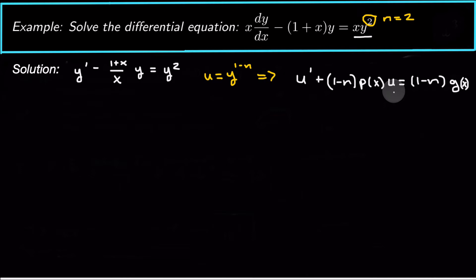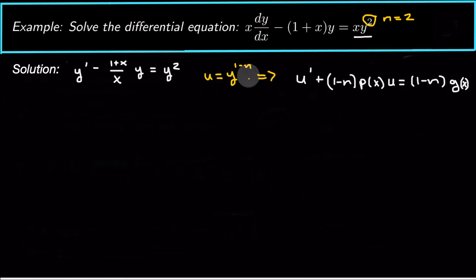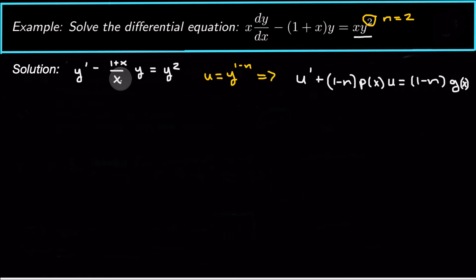That's always what our linear equation turns out to be after the substitution. If you don't want to remember that, you can make the substitution and find dy/dx in terms of u, then substitute in y in terms of u. But remembering this formula is easier. Here, p(x) is negative (1 + x)/x and g(x) is just 1.